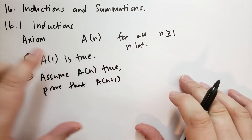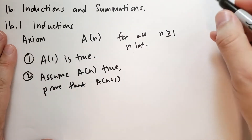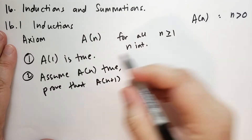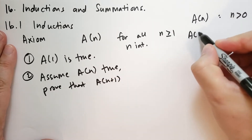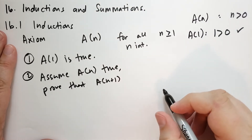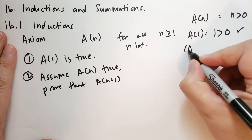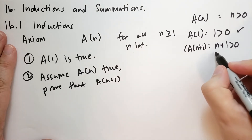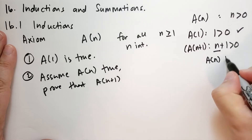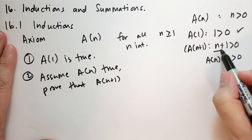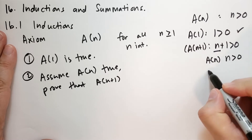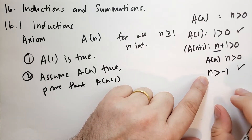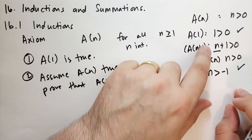A very simple assertion we can prove: let's say A(n) states that n is greater than 0. We can prove that for 1 — A(1) is the statement that 1 is greater than 0, which is true. Now we prove A(n+1), which says n+1 is greater than 0. We already know n is greater than 0, so n is definitely greater than minus 1, and therefore n+1 is greater than 0. So we've proven for all integers greater than or equal to 1 that the number is greater than 0.